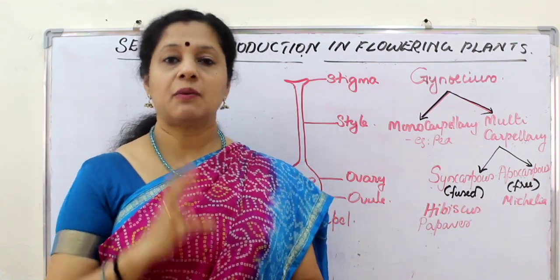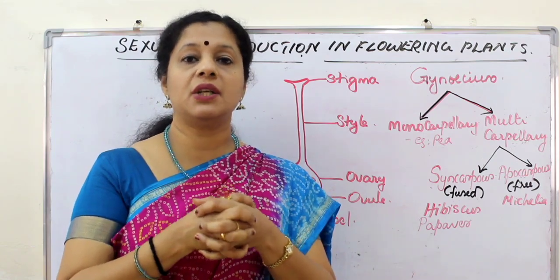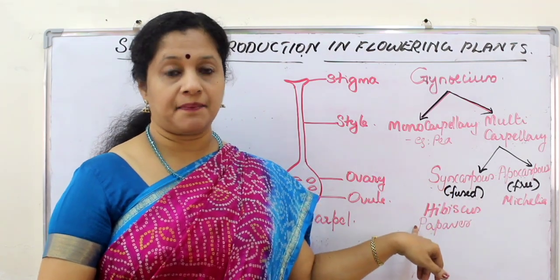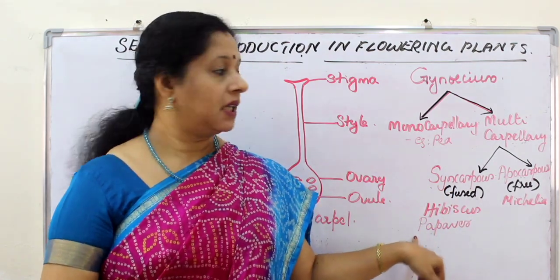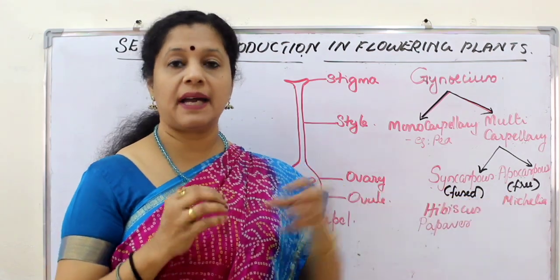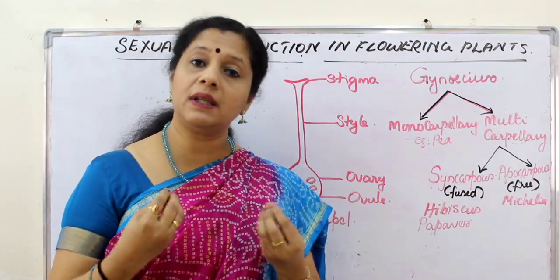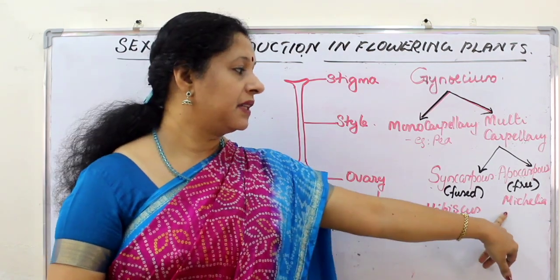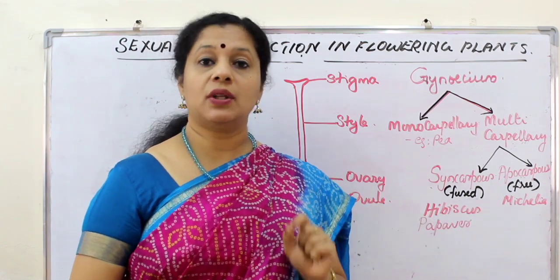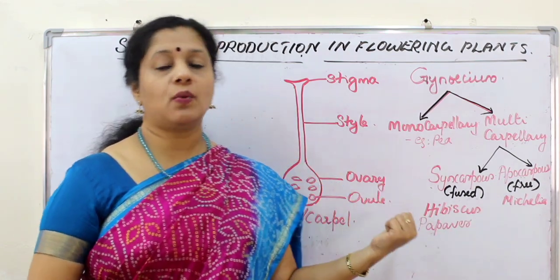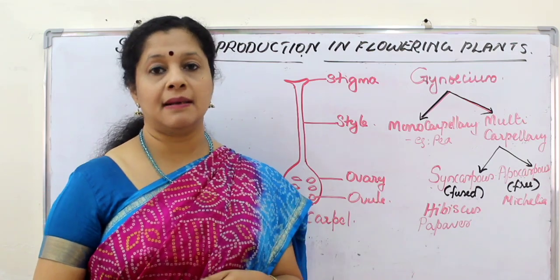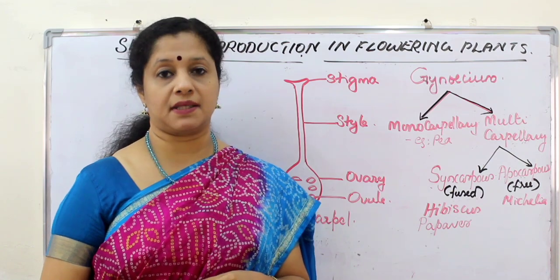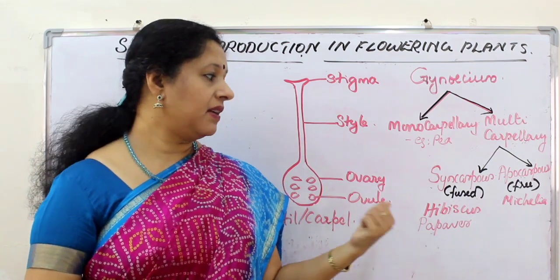Syn means fused. Suppose there are five carpals and all five are fused into a single structure — that is called syncarpous. Examples are hibiscus and papaver. Apocarpous means free — if there are five or three carpals and all of them are free, that condition is called apocarpous. They are not fused. Example is Michelia. In your textbook there is a diagram showing both, with papaver and Michelia as examples.